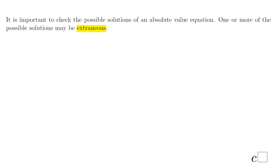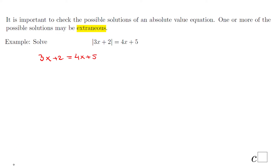In the last part of this lesson, we're going to look at this type of equation — it's still an absolute value equation, but notice we have x's on both sides. We write two equations: the first one is 3x plus 2 equals 4x plus 5 (the positive quantity), and the second equation will be 3x plus 2 equals negative 4x plus 5 — using the positive and negative quantity, the same concept.